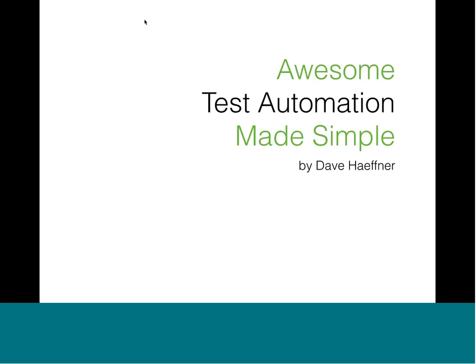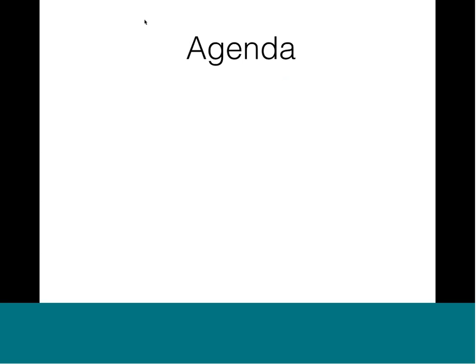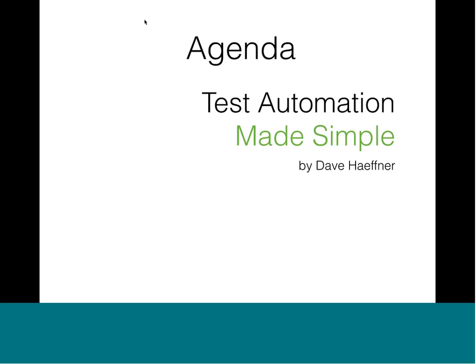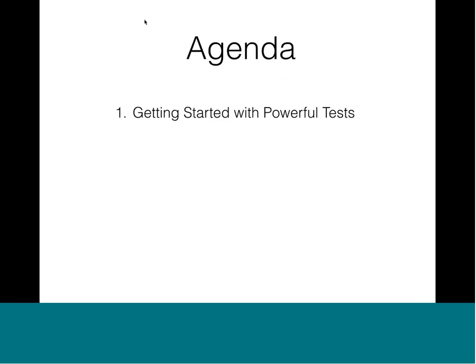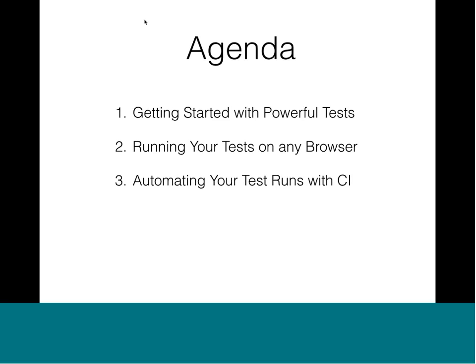With that, we're going to go ahead and pass this over to Dave Hefner. This is Awesome Test Automation Made Simple, and it's a four-part play. The first act is getting started with powerful tests using some open source tooling and a commercial solution. Then we'll move into taking those tests and running them on any browser and operating system combination. Then we're going to show how to automate your test runs using continuous integration. And at the end, there's going to be a Q&A panel.